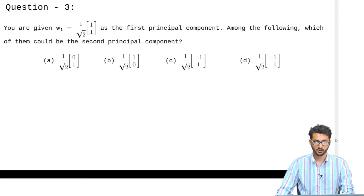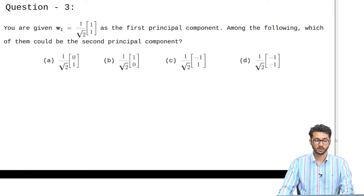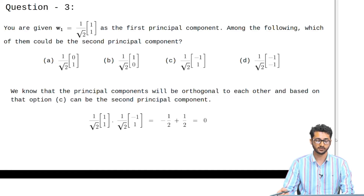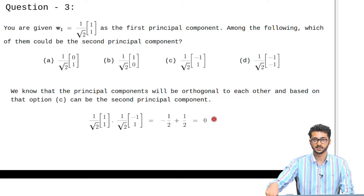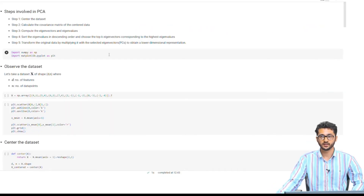Finally, we have a question in which we are given the first principal component and asked which of the following options can be the second principal component. We know that principal components have to be orthogonal to each other, so an easy way is to multiply the two vectors and see which gives the value 0. Multiplying the given vector w_1 with option C gives 0, indicating that option C can be the second principal component. Now that we have seen the numerical in the slides, we will test it out using Python and see the results.